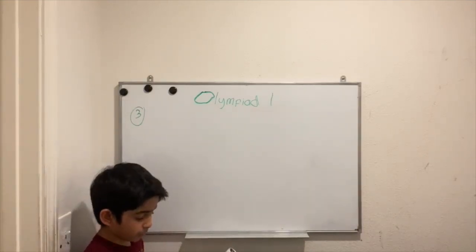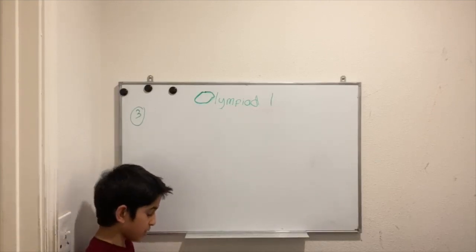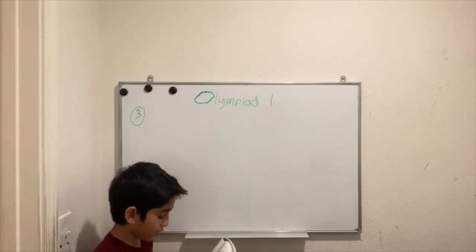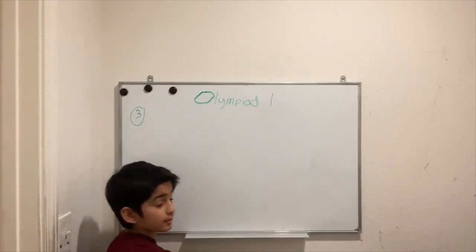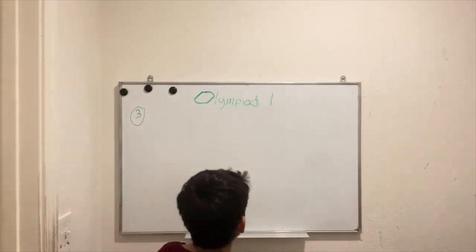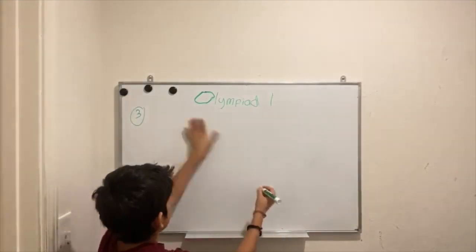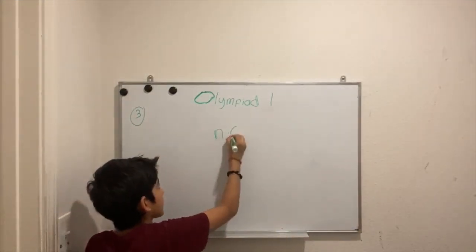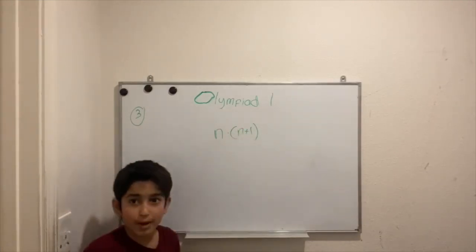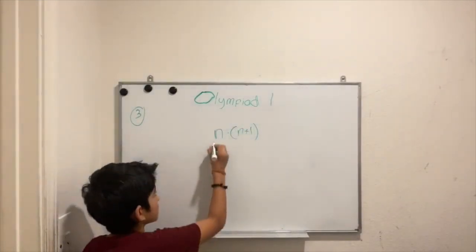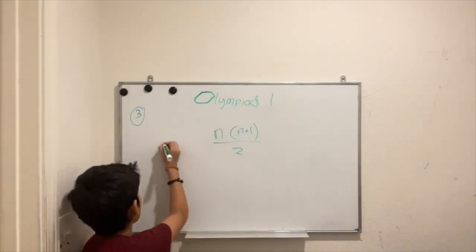The third problem is: find the sum of the counting numbers from 1 to 25 inclusive. In other words, if S equals 1 plus 2 plus 3 all the way to 24 plus 25, find the value of S. There is a simple formula for these types of problems: n multiplied by (n plus 1), divided by 2, where n is the greatest number in the sequence.